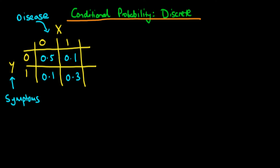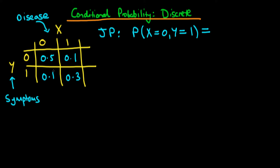As we've spoken about before, all of these joint probabilities summed together have to add up to one, as they do in this particular matrix. So the joint probability here might be: what is the probability that an individual doesn't have the disease and they are symptomatic — the probability that X equals zero and Y equals one. All we need to do is find which entry this corresponds to, and it's this bottom left component here, which gives us a value of 0.1.